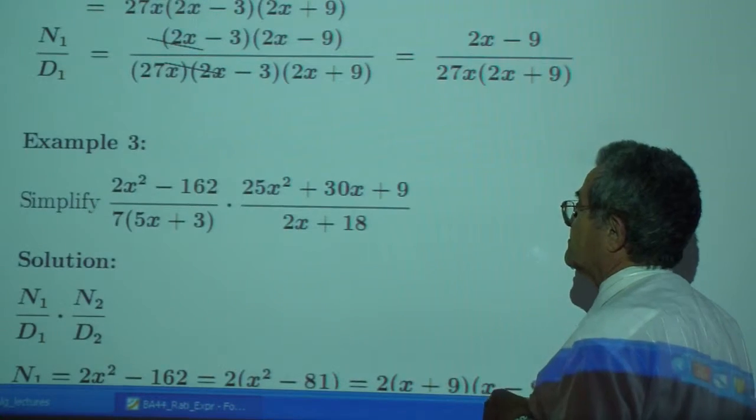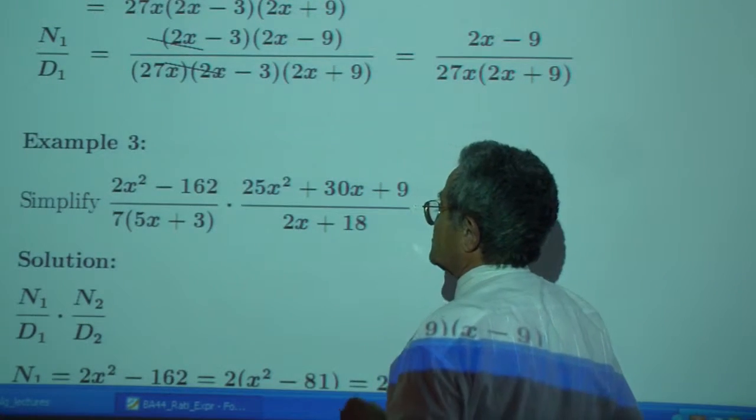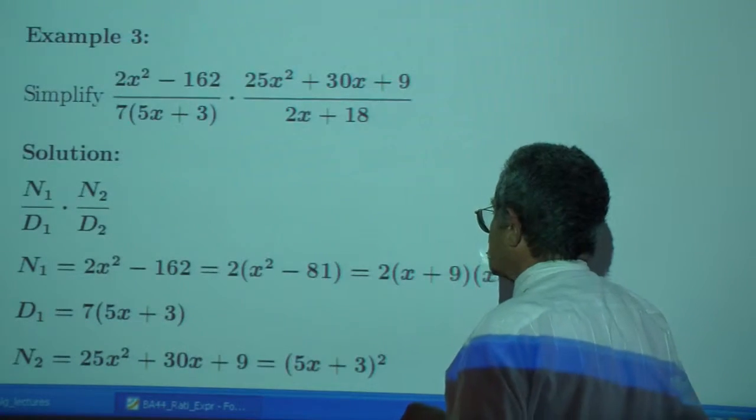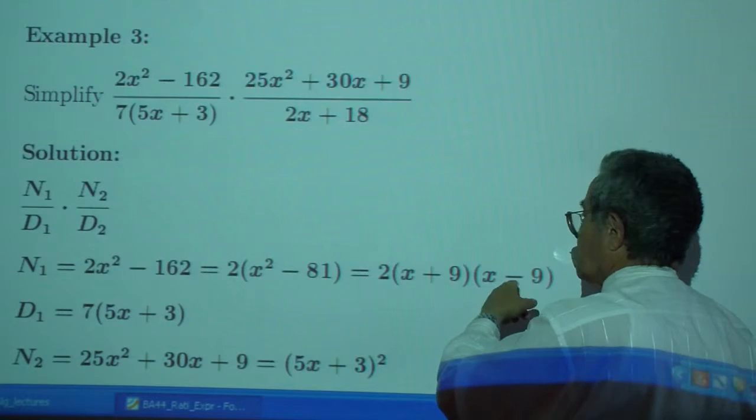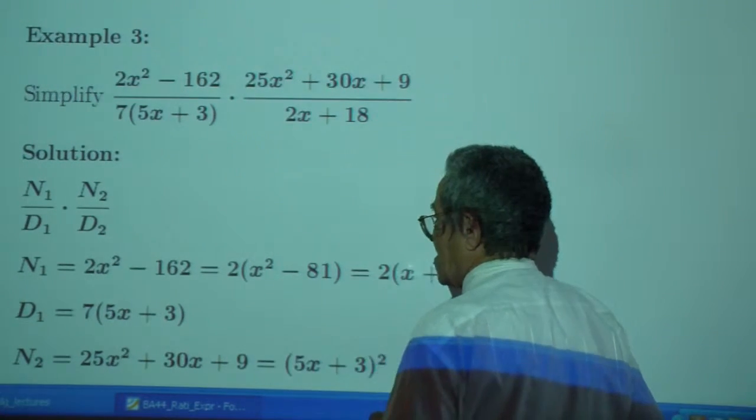How about this one? Now, we want to multiply one fraction by another fraction. We have numerator 1 over denominator 1, numerator 2 over denominator 2. Factor numerator 1. Difference of 2 squares here, after you factor out the greatest common factor.